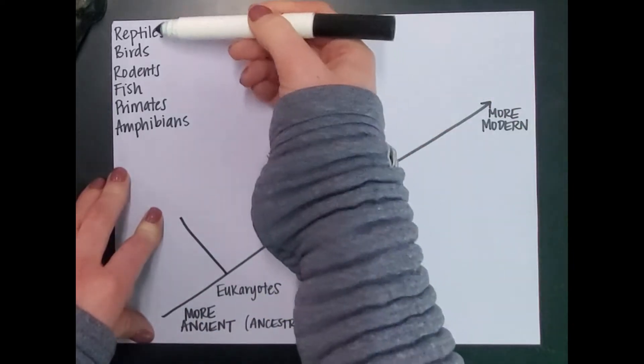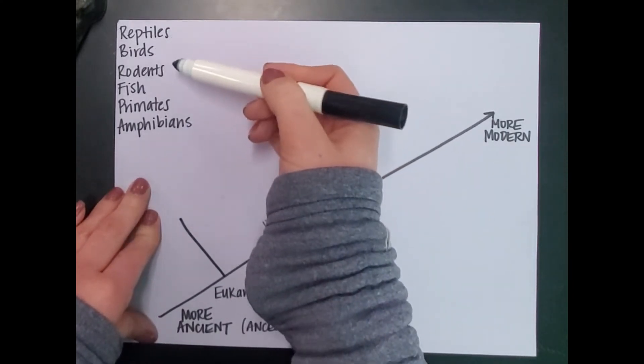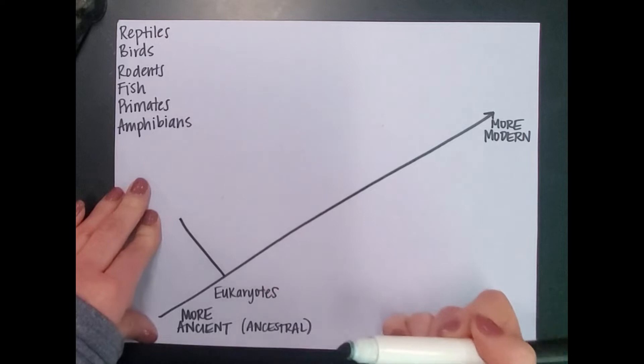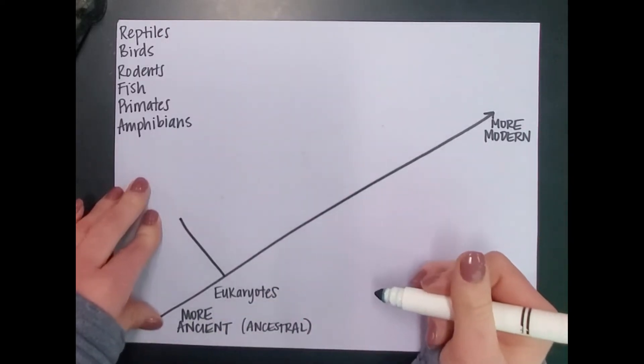I have several different classes of organisms I'm going to put in my cladogram today: reptiles, birds, rodents, fish, primates, and amphibians. I'm going to put all of those into this cladogram based on some shared characteristics.